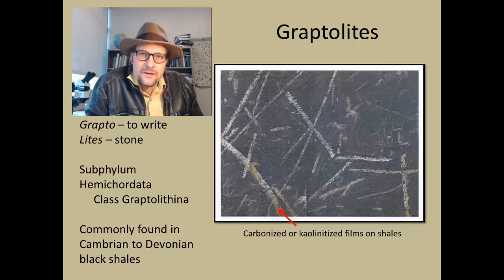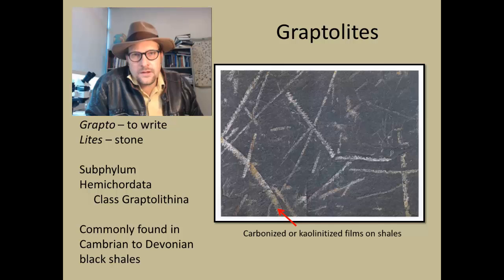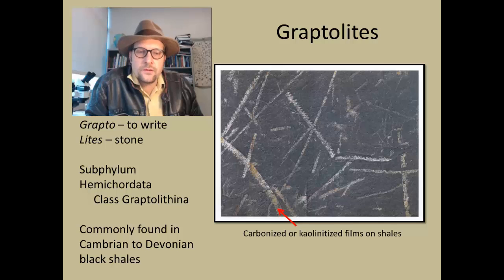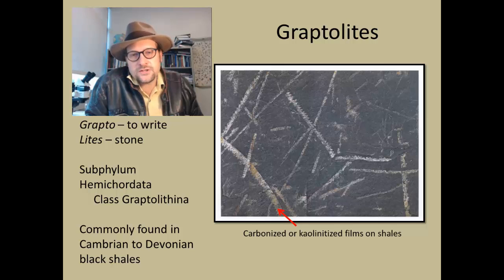They are placed within the subphylum Hemichordata, a living group today that includes some interesting tube worms, the penis worms, and some other really interesting invertebrates. They are placed within their own class called the Graptolithia, and are commonly found in the Cambrian to Devonian, often in these black shales.